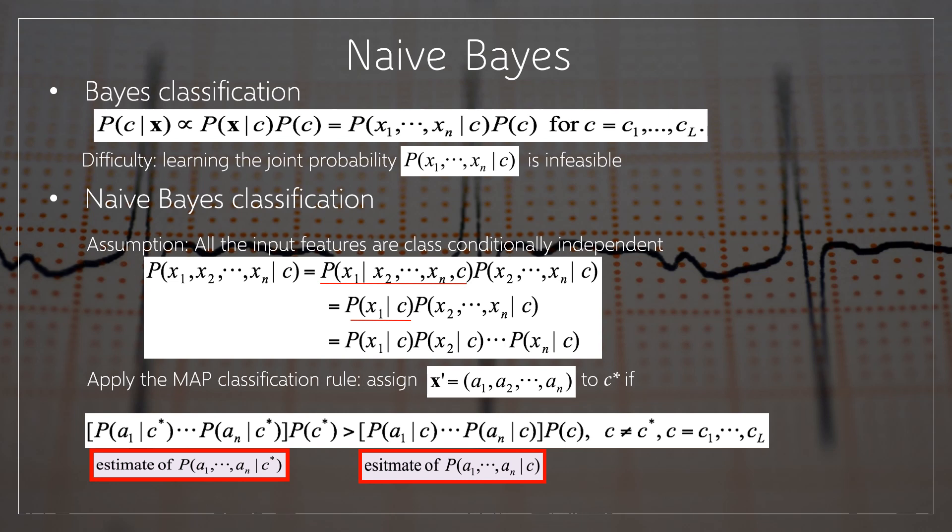The difficulty in learning the joint probability P is infeasible. The Naïve Bayes classification assumption is that all the input features are class conditionally independent.